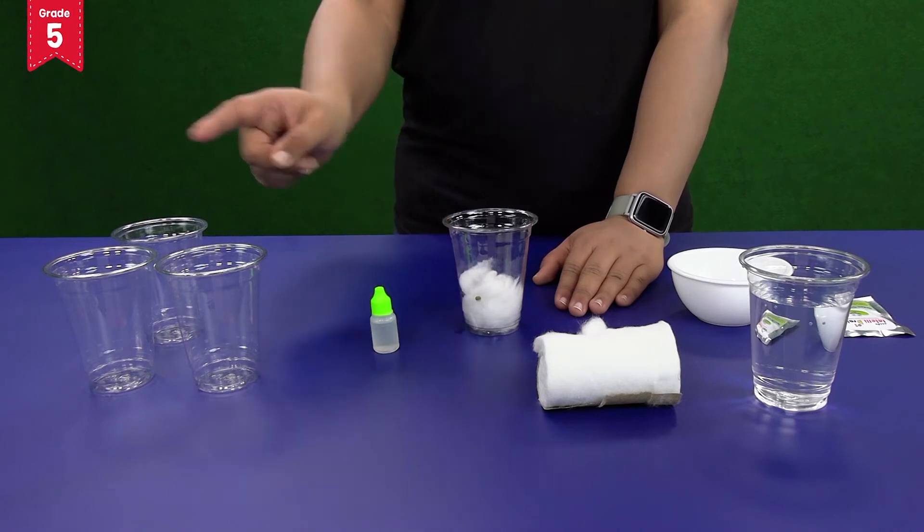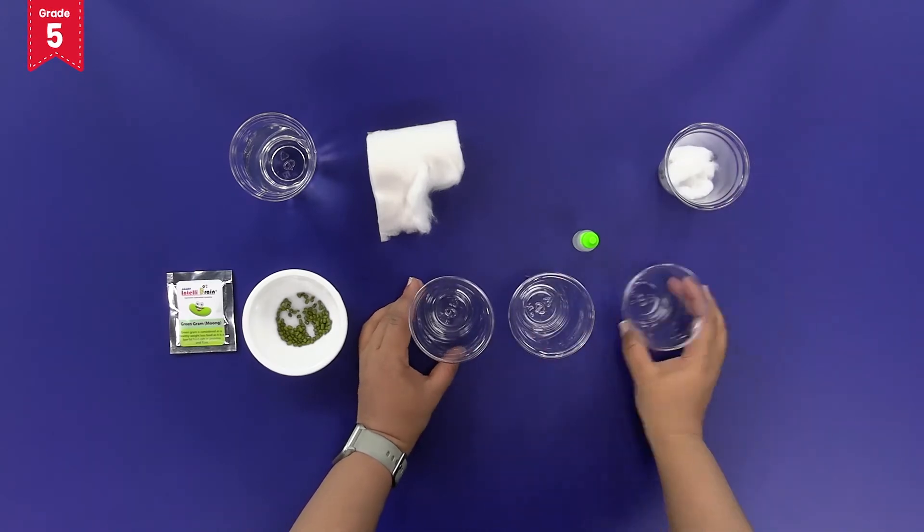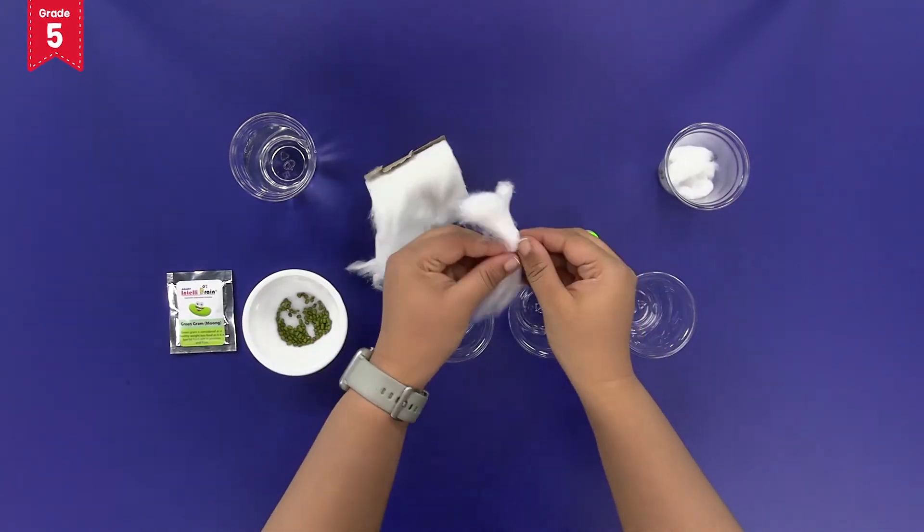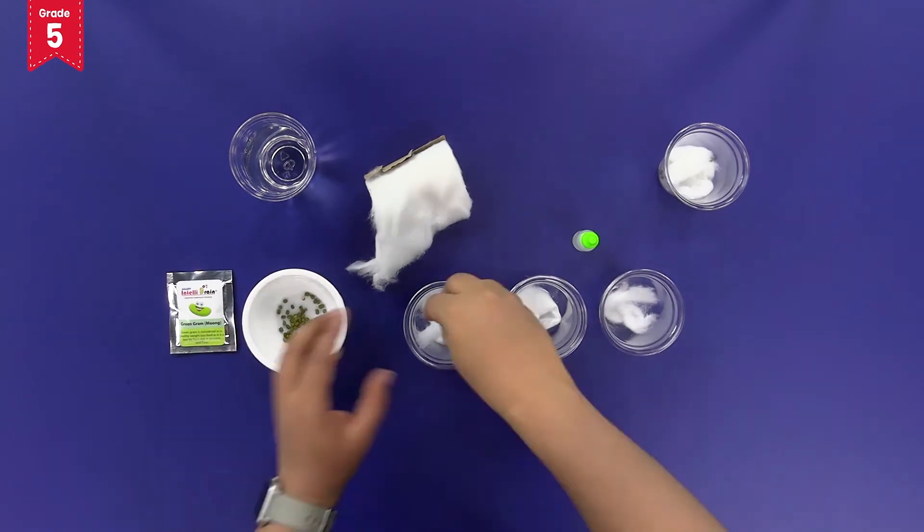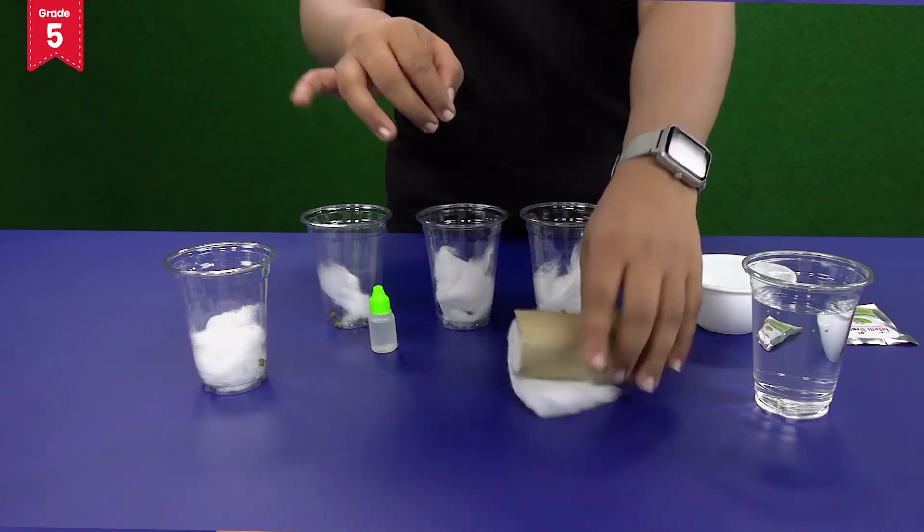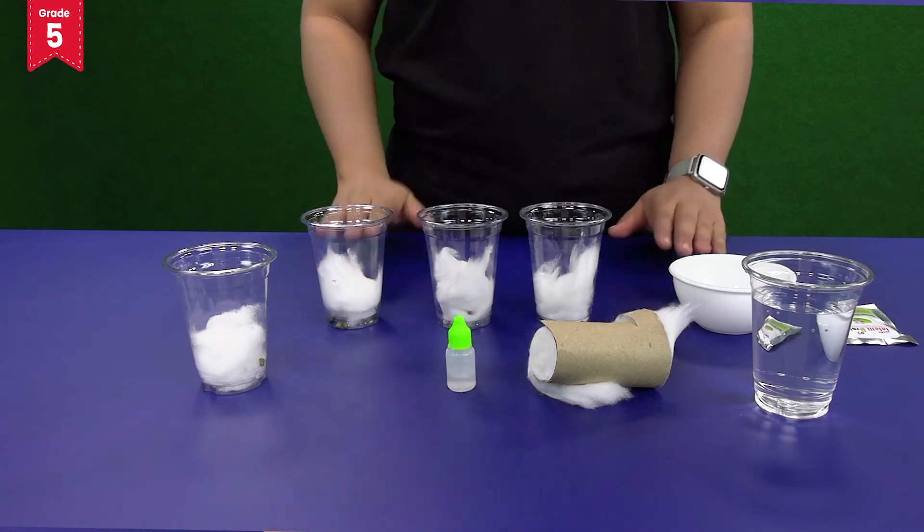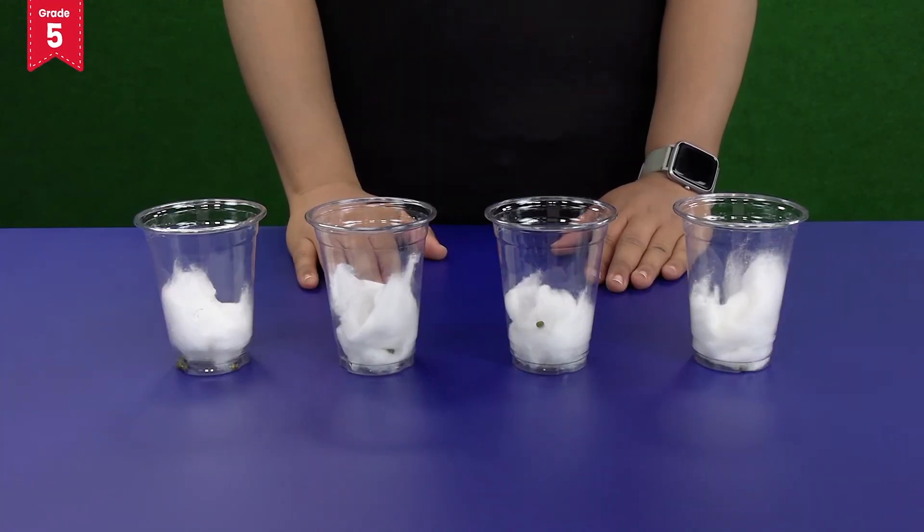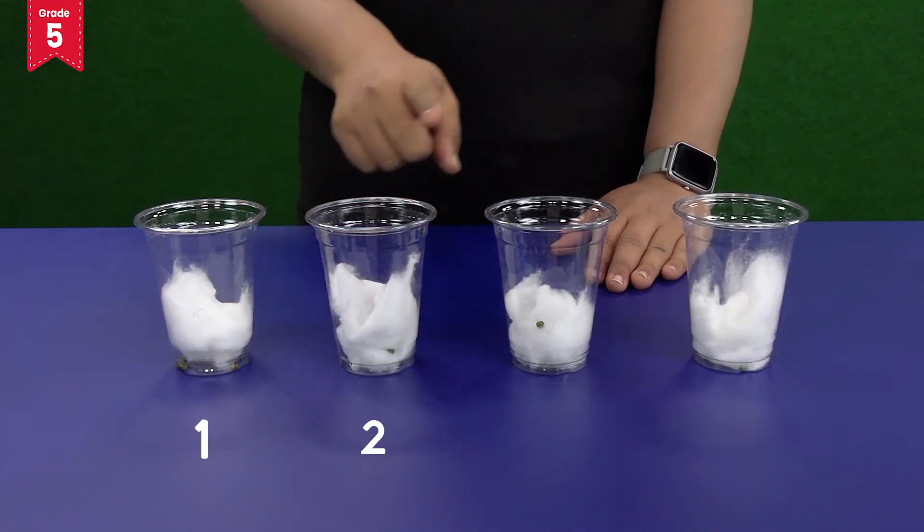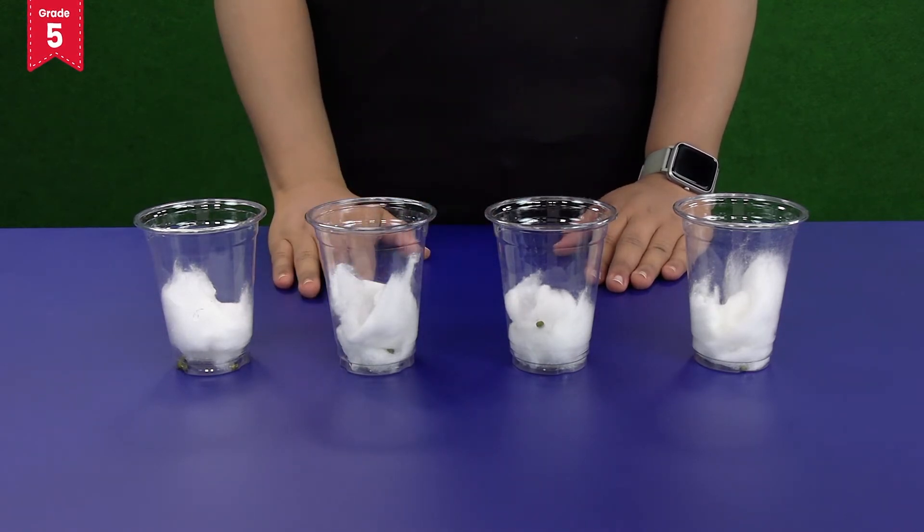Prepare three more identical specimens. Name all the glasses as glass 1, 2, 3 and 4. Let's keep each of these glasses under different conditions and find out which of them are required by the seed for germination.